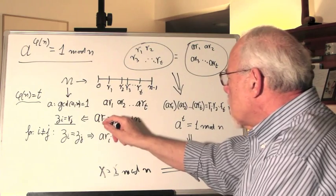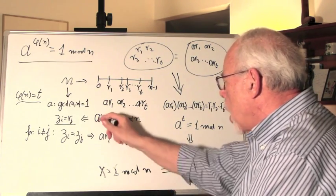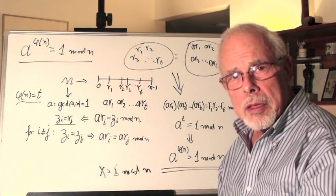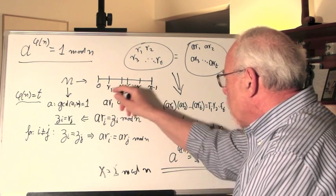Now Euler observed that zi must be one of those values, must be a member of this set. Why? Because ri is co-prime with n by definition. A is co-prime with n by definition. So zi has to be co-prime with n. And if it's co-prime with n, then zi belongs to this set.